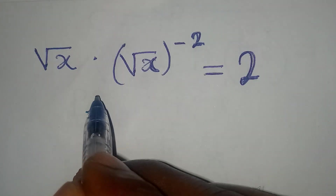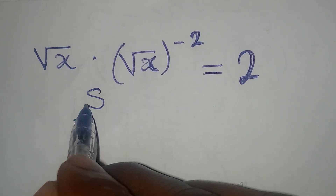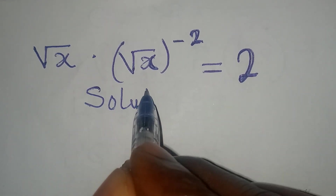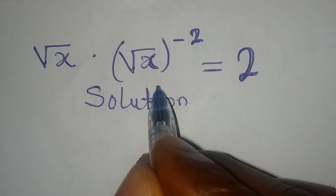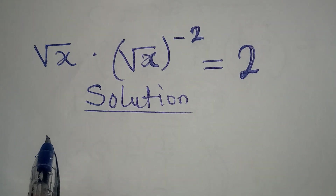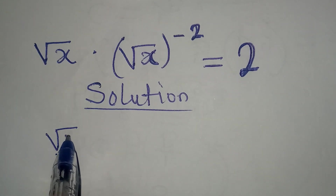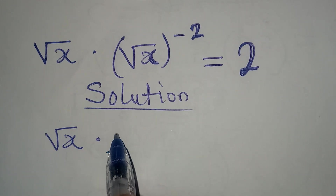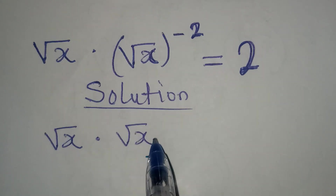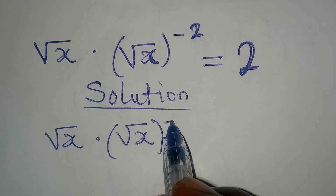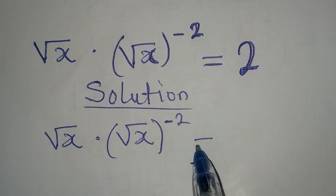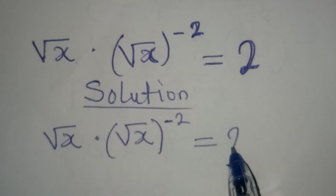Hello everyone. Let's solve this problem quickly. We have square root of x multiplied by square root of x to the power of negative 2, equal to 2.